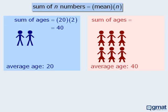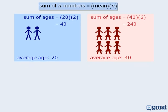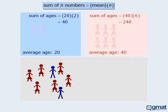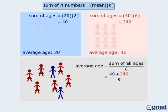When we apply the same formula to the women, we see that the sum of their ages is 240. Now when we combine the two groups, the average age of the eight people will be the sum of all eight ages divided by 8. The men's ages add to 40 and the women's ages add to 240, so the average age of the combined population is 35. Notice that this time, the average age of the combined population is not the same as the average of the average ages of the two original groups.